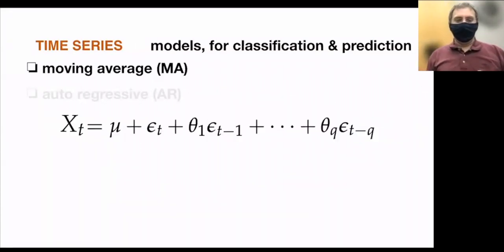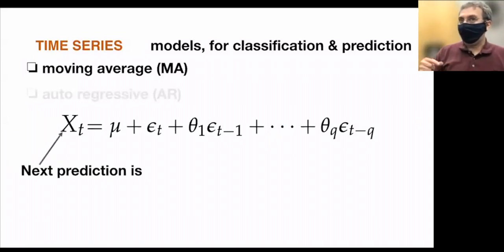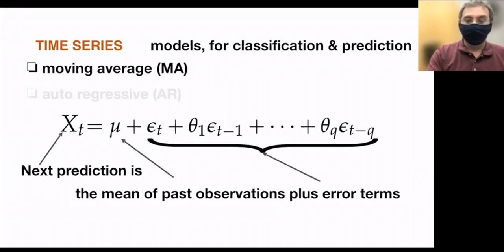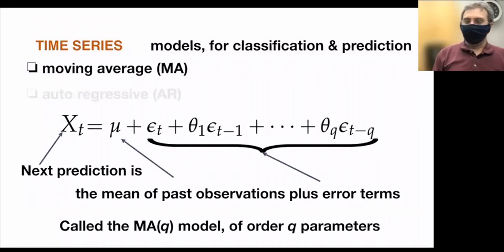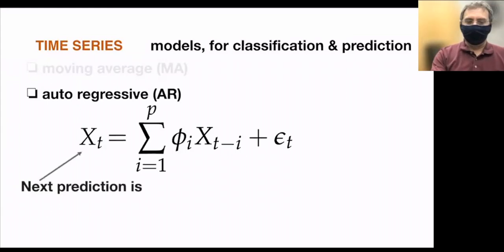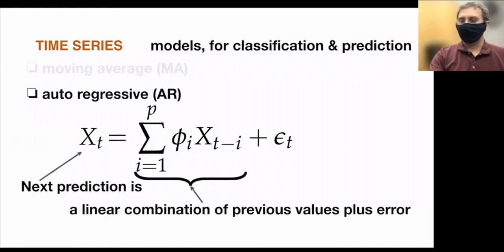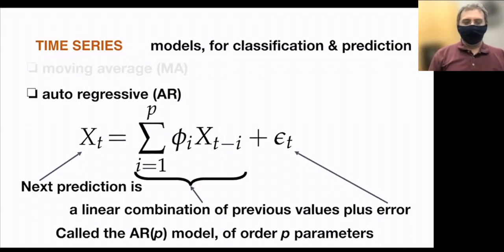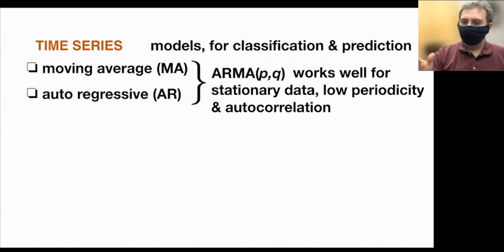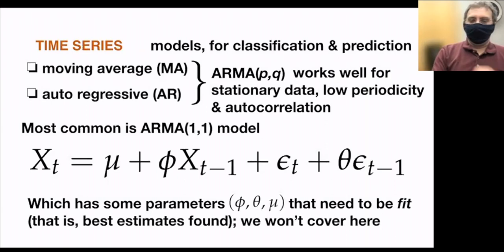The moving average model — MA(q) — says the next predicted value X at time T equals the mean mu plus some q error terms. The autoregressive model — AR(p) — says the new data point is a linear combination of the p previous values plus error. When combined, it's called an ARMA(p,q) model. This works well with stationary data, low periodicity, and low autocorrelation. The most common is ARMA(1,1), which says the next data point is the mean plus a function of the past one value plus noise.